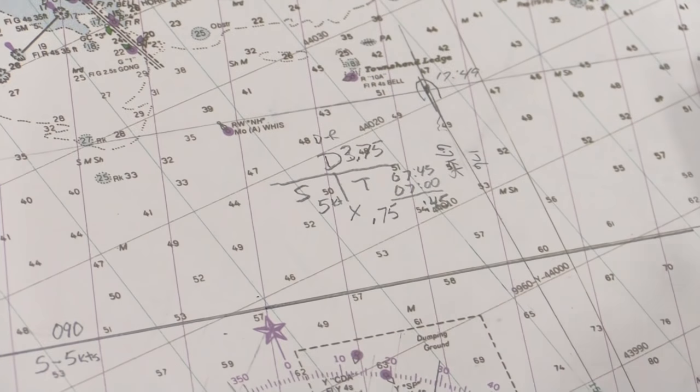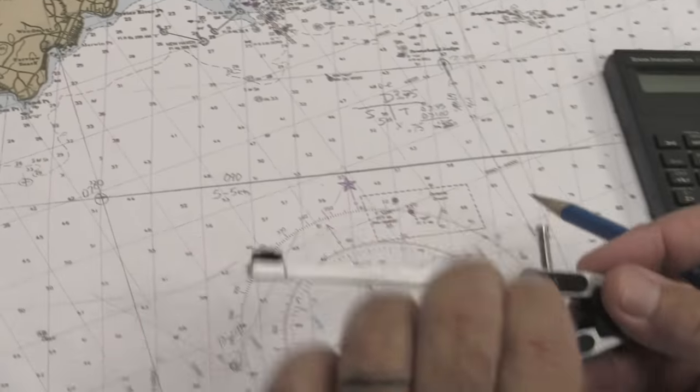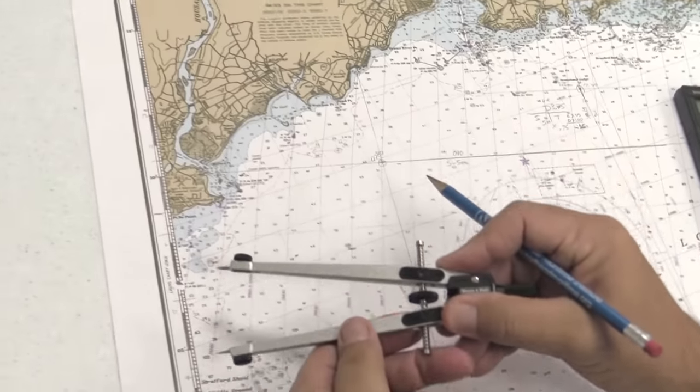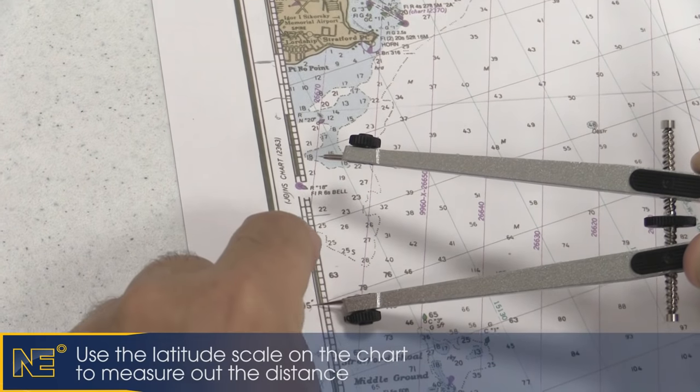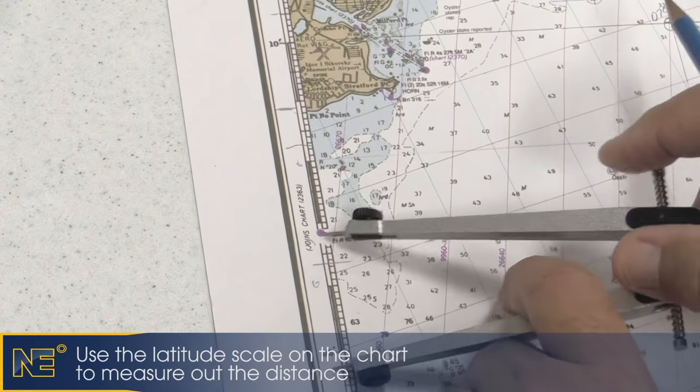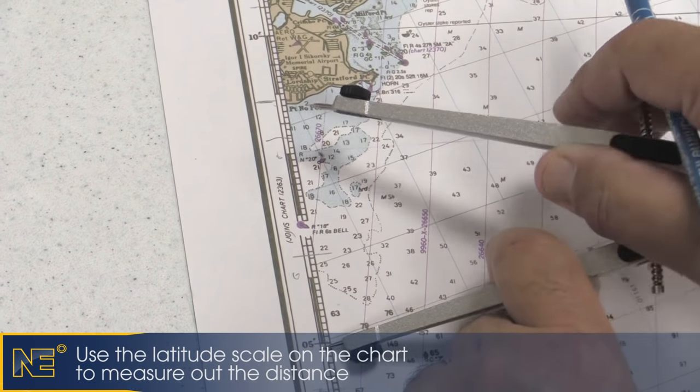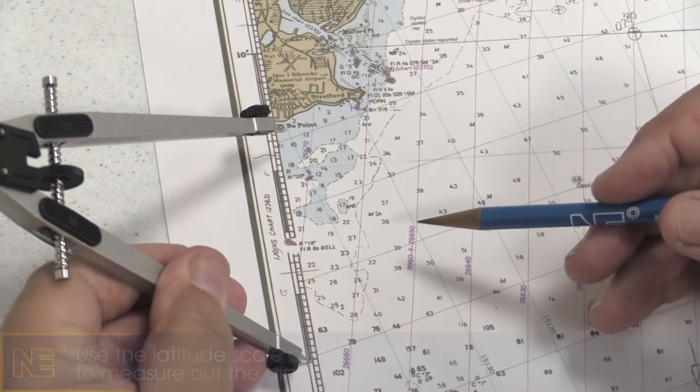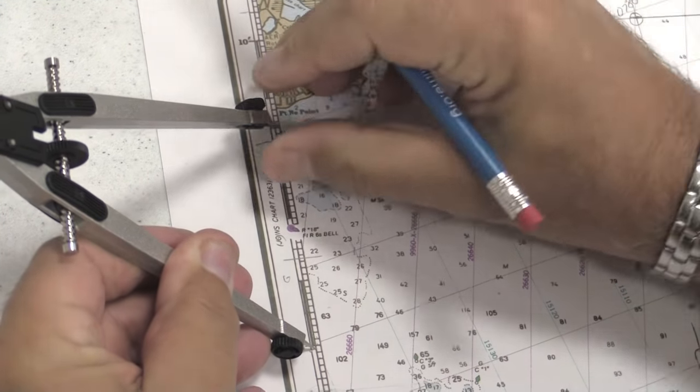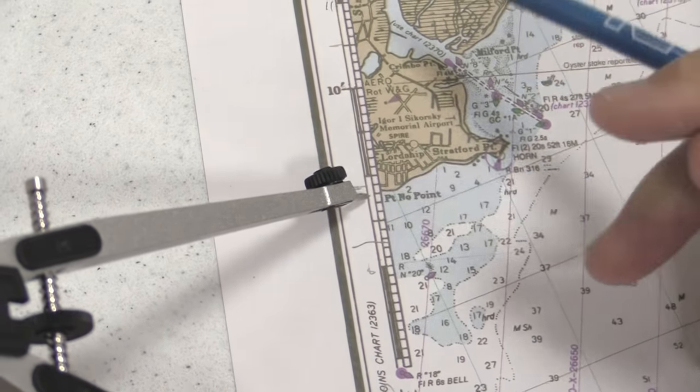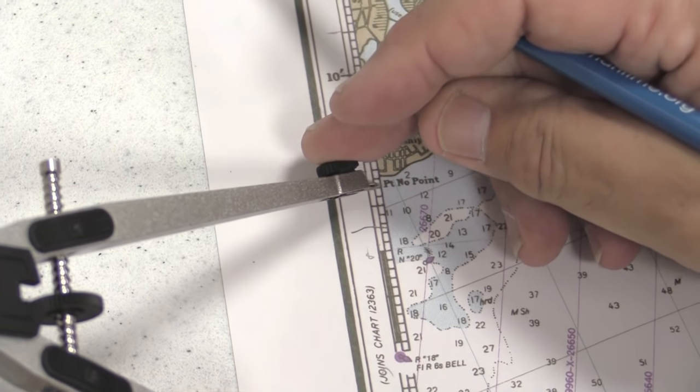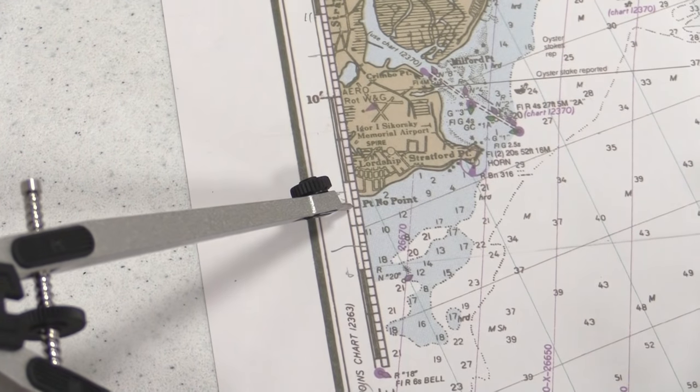We take that 3.75. We go to our dividers. On the side of the chart, we find 3.75 miles: 1, 2, 3, 0.5, 0.6, 0.75, so 3.75.